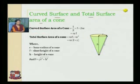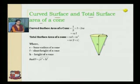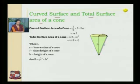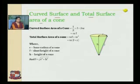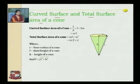Next is surface area of the cone. A cone is made up of two surfaces: one curved surface and one circular surface. The curved surface area of a cone is 1/2 times l times 2 pi r, which equals pi r l, where 2 pi r is the circumference of the base. Therefore, the total surface area of a cone is pi r l plus pi r squared, equals pi r(l plus r), where r is the base radius, l is the slant height, h is the height, and l equals the square root of (r squared plus h squared).